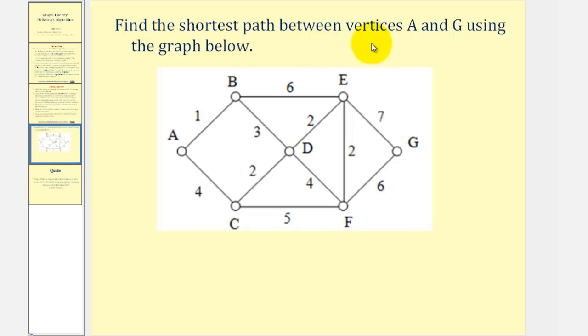We want to find the shortest path between vertices A and G using the graph. So we're going to work backwards from G and find the shortest path to A, though it really wouldn't matter if we started with A and found the shortest path to G.